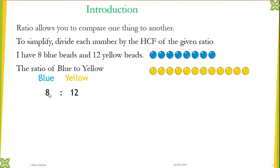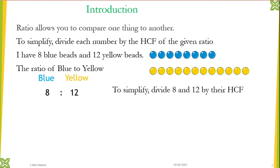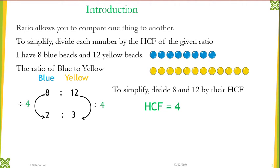We read this as 8 is to 12. To simplify, we need to divide 8 and 12 by the highest common factor — meaning what is the biggest number to divide 8 and 12. If you can't find the biggest number you can do the division in steps, but if you can work out the highest common factor it's easier and faster. You can see four is the biggest number to divide 8 and 12, so divide each number by 4. We get 2 for blue and 3 for yellow.